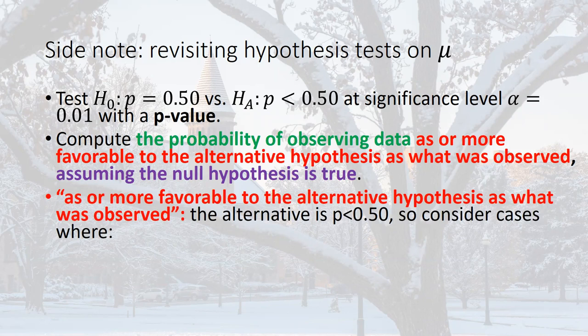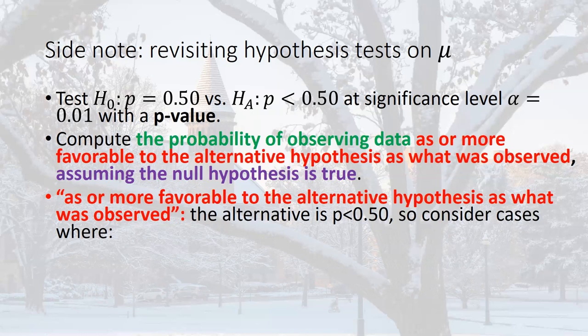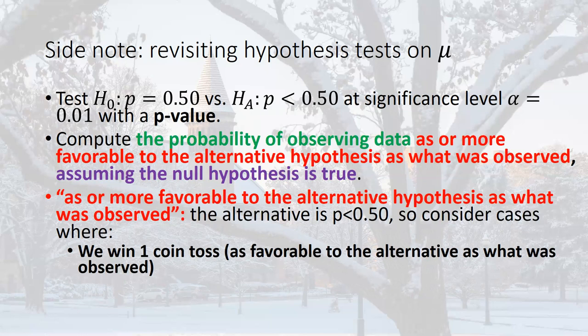The purple part means we assume p is 50%. For the red part — 'as or more favorable to the alternative hypothesis as what was observed' — since the alternative is p less than 50%, favorable to the alternative means winning few coin tosses. We actually observed winning one coin toss, which supports the alternative.